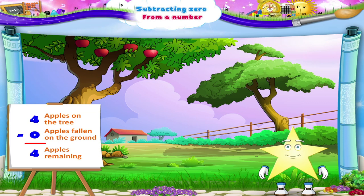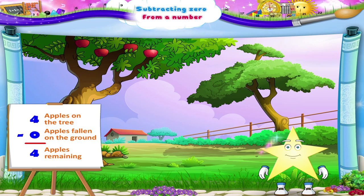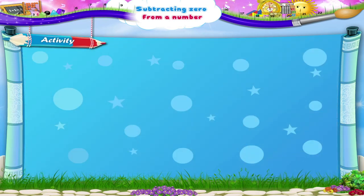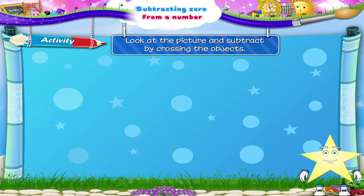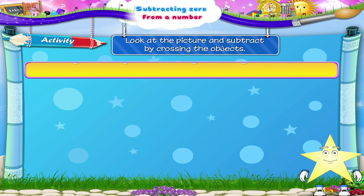Easy, isn't it? Now, let us do an activity together. Look at the picture and subtract by crossing out the objects. Shall we begin?